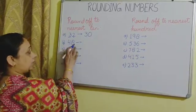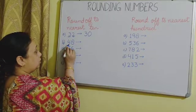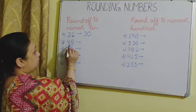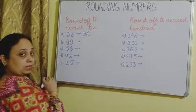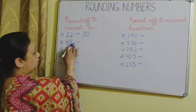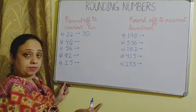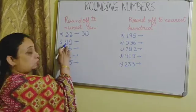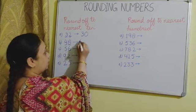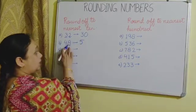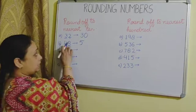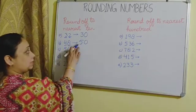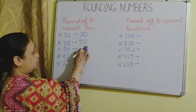Next, we have 48. We have to round the 4 in the 10's place. To the right is 8 in the 1's place. This digit is more than 5, so we will add 1 to 4. 4 plus 1 will be 5. And in place of 8, we are going to write 0. So 48 is rounded off to 50.